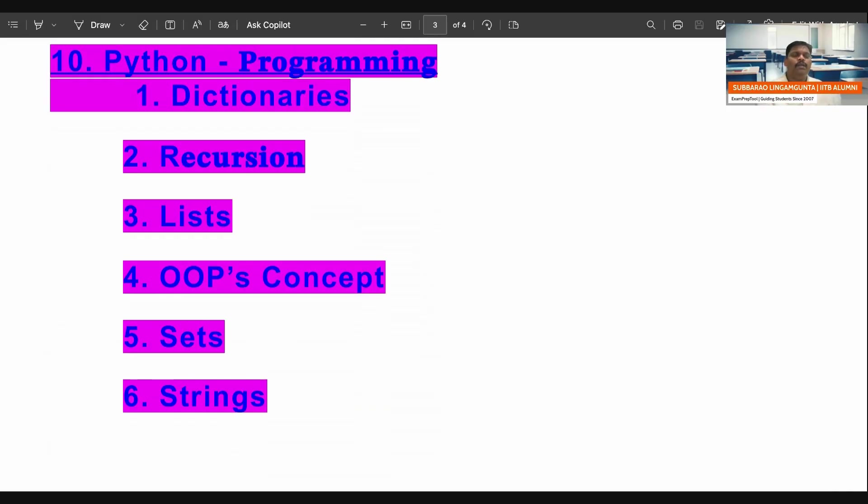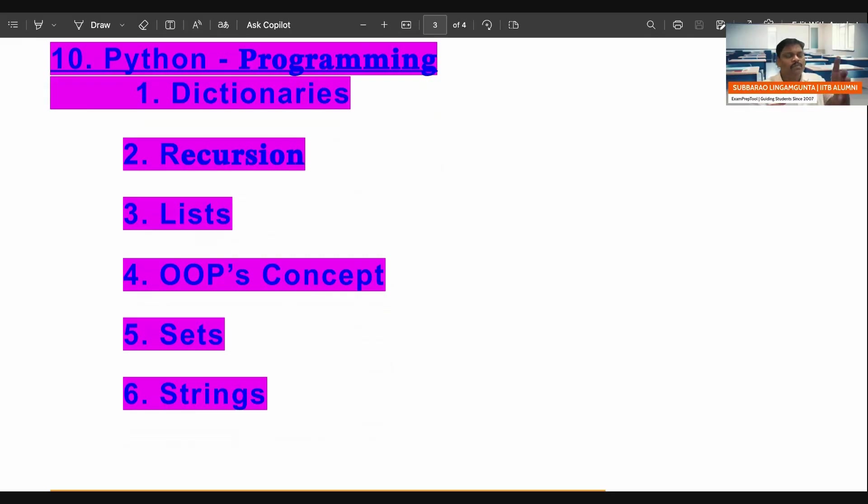Next subject is Python programming. This is going to be very easy scoring. Very small, very less topics are there in Python programming which are very important. Dictionaries are coming again and again. Dictionaries with recursion. Next one is recursion and lists too. Dictionary, recursion, list combination. Some OOPs concepts also required. Next one is sets also coming again and again. Strings also coming again and again. These are the things. First you study this. Still if you have time, you can take care about the other topics also. These are the most important topics of total GATE DA. If you study all these things, I'm sure you are going to get 90 marks. PAKKA I'm saying, through experience I'm saying.